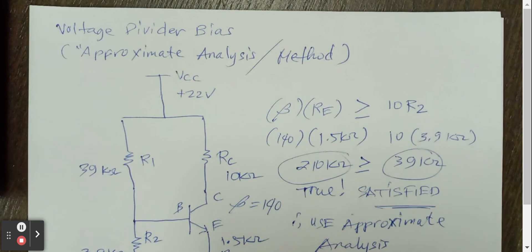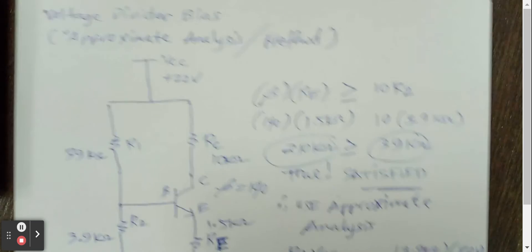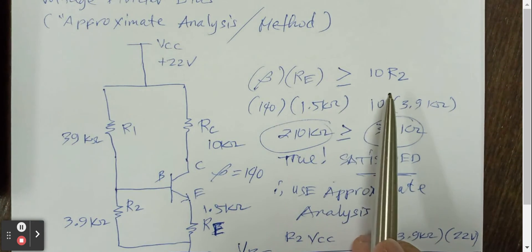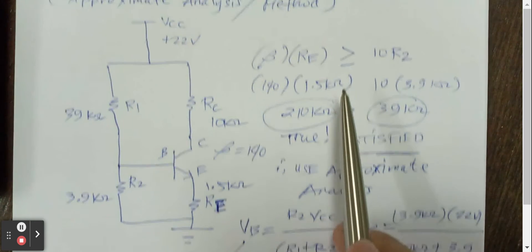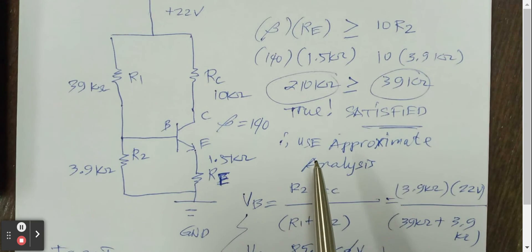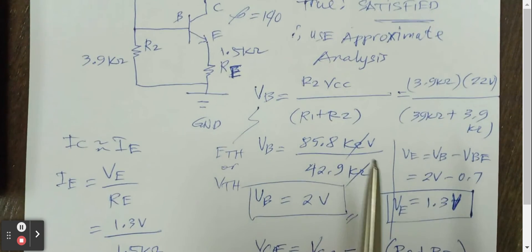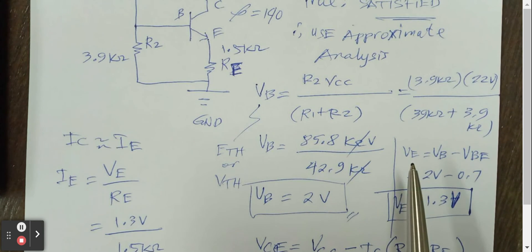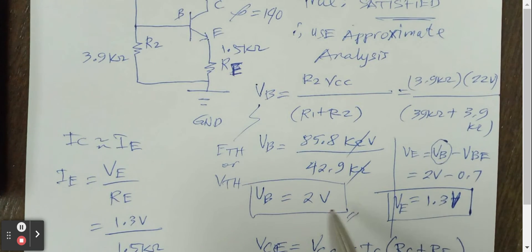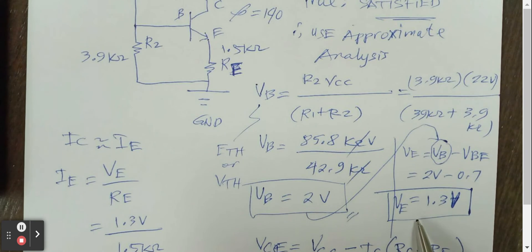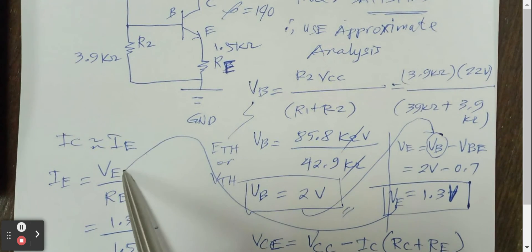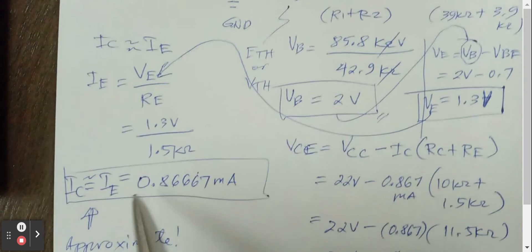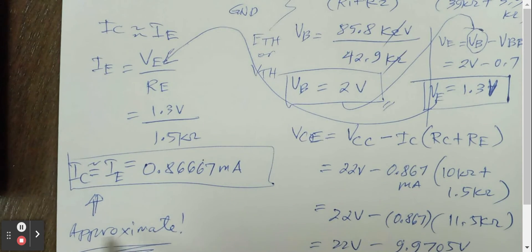But let's focus again on voltage divider bias. First of all, you have to check whether the product of beta Re will be greater than the product of 10R2. If it is bigger than that, then it will be true. Satisfied, then you can use the approximate analysis. And all you have to do is to calculate Vb so that you can calculate the Ve because we need the value of Vb here. And after you get the value of Ve, then you can divide it by Re so that you will get the Ie. And because you got the Ie, you will get the Ic. This is why we call it approximate analysis.